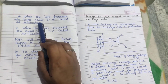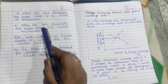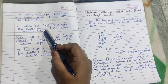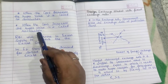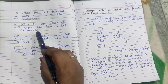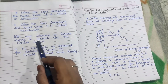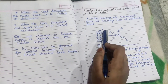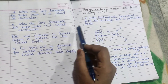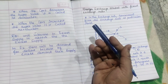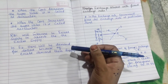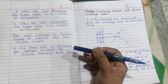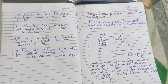When the government decreases the rupee value, it is called devaluation. When the government increases the rupee value, it is called revaluation. In any case, the RBI will intervene whenever there is excess demand or excess supply.